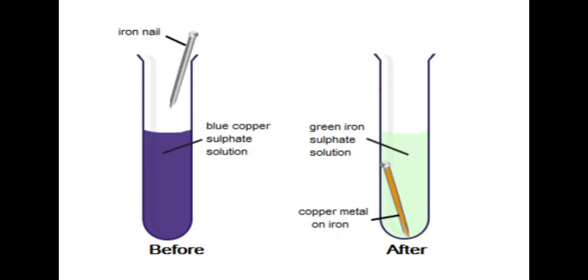After about 30 minutes, or around half an hour, we will see that the blue color of the copper sulfate solution changes into a light green color, and a brown deposit is formed on the iron nail.